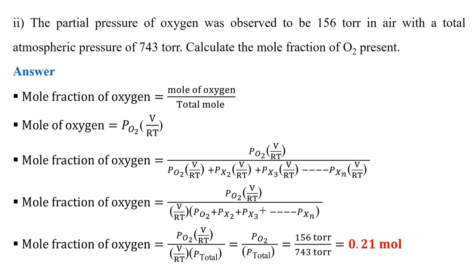Moving to number ii: the partial pressure of oxygen is 156 torr in air with a total atmospheric pressure of 743 torr. Calculate the mole fraction of oxygen. The mole fraction of oxygen equals moles of oxygen divided by total moles. Since moles = PV/RT, the moles of oxygen equal the partial pressure of oxygen times V over RT, and the total moles include oxygen and all other gases in air.